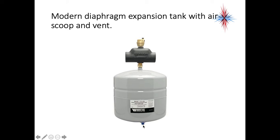There is a Schrader valve at the bottom of the expansion tank so that we can adjust the pressure. The air scoop is very simple — water flows through in the direction of the arrow, and air gets pulled out of the water and sent out through the automatic air bleed at the top.